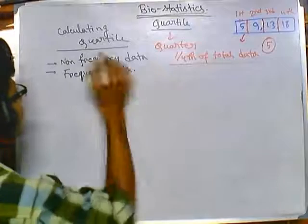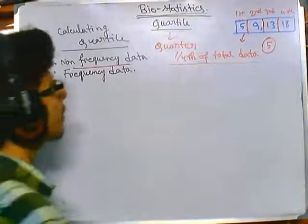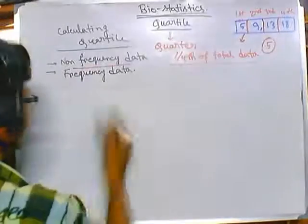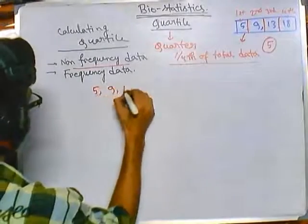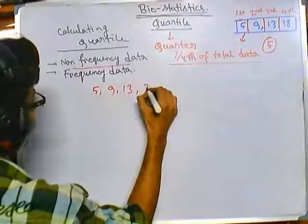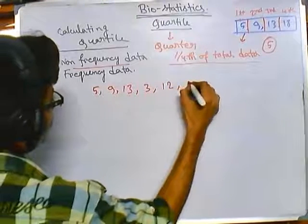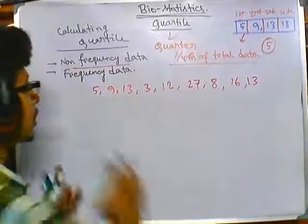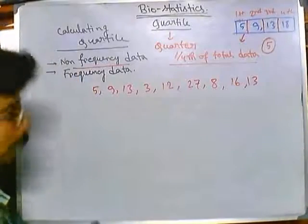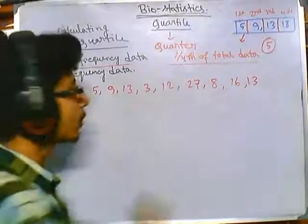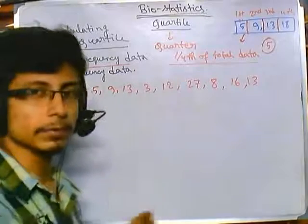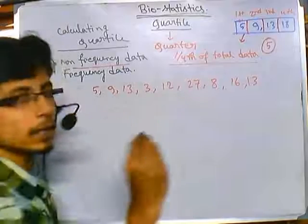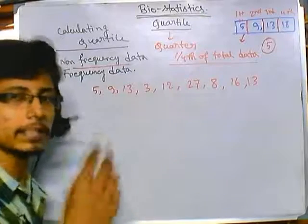For non-frequency data it is easier. Say we get a data set like: 5, 9, 13, 3, 12, 27, 8, 16, 13. This is a non-frequency type data set. From this data set we need to get the quartile value. The way of calculating the quartile value for non-frequency data is divided into several steps.